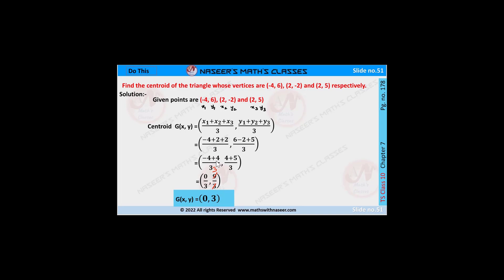Here 2 plus 2 is 4, and minus 4 plus 4 we get 0. And 6 minus 2 is 4, and 4 plus 5 is 9. Then we can write this as 0 by 3 comma 9 by 3. Here 0 by 3 is 0, and 9 by 3 is 3. Therefore the centroid G(x, y) is 0 comma 3.